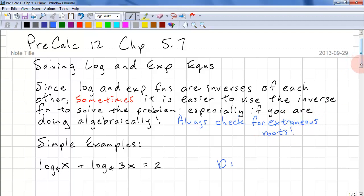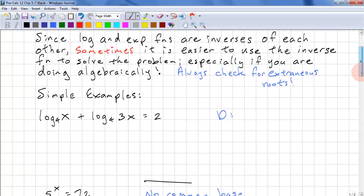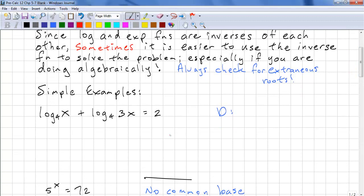Let's look at some simple examples. Here we have log₄(x) + log₄(3x) = 2. So what you need to notice first is the domain is x > 0.